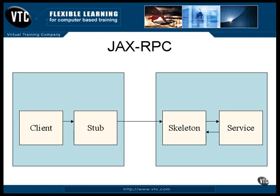The return value from that method is sent back to the skeleton. The skeleton, or the tie, then packages the return value as a SOAP message and returns it to the stub. The stub then converts the returned data into the form expected by the local caller and uses it as the returned argument to the client.